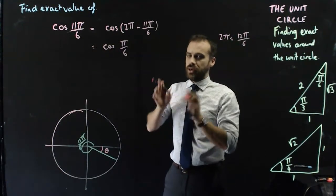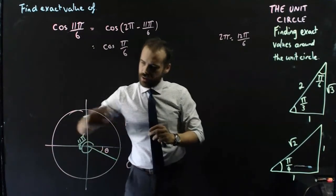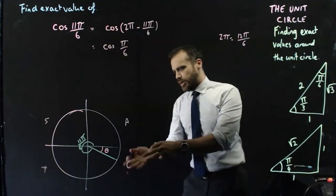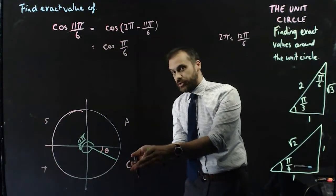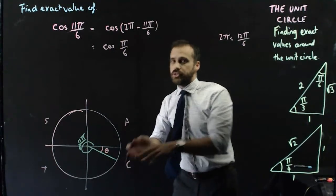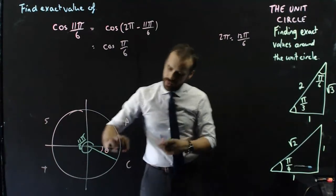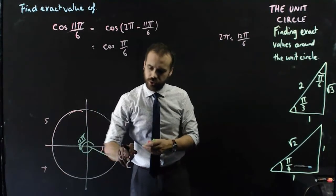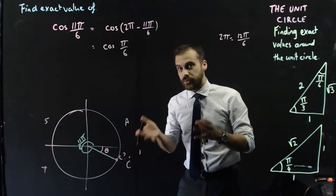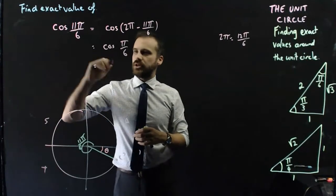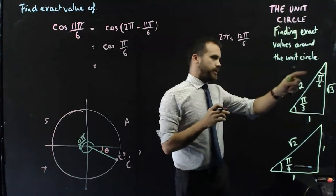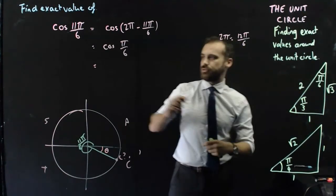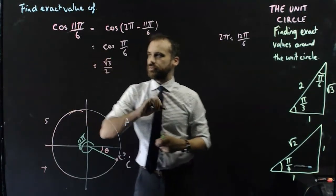Now I should pause — C-A-S-T. Should this be positive or negative? Well, I'm working in the fourth quadrant, which is our cosine quadrant, so it's going to be positive. Remember, we're finding cosine here — we're finding the x-coordinate of the dot, and the x-coordinate of that dot is positive. So, pi on 6, adjacent over hypotenuse: root 3 on 2.